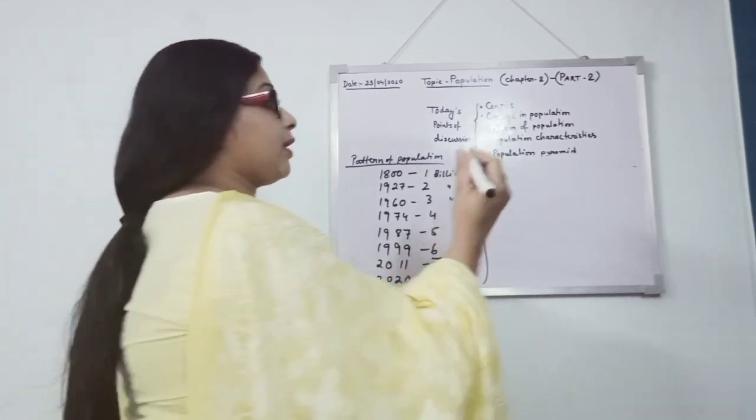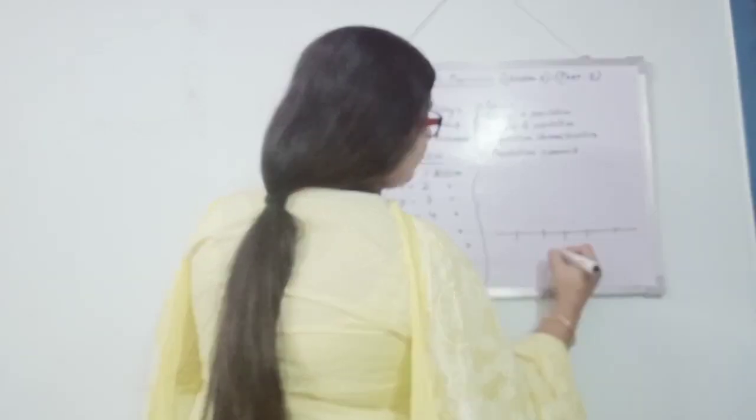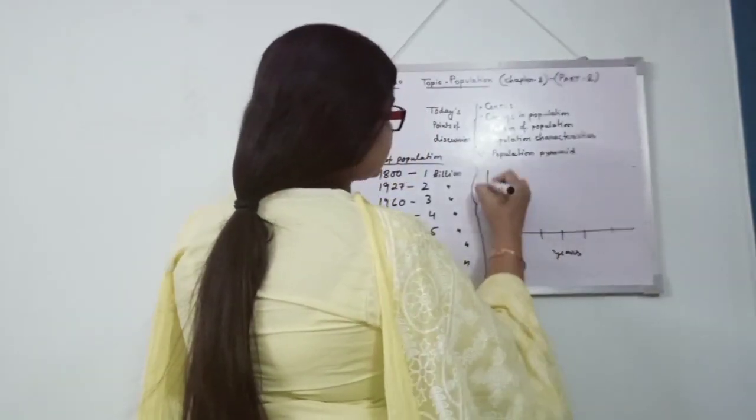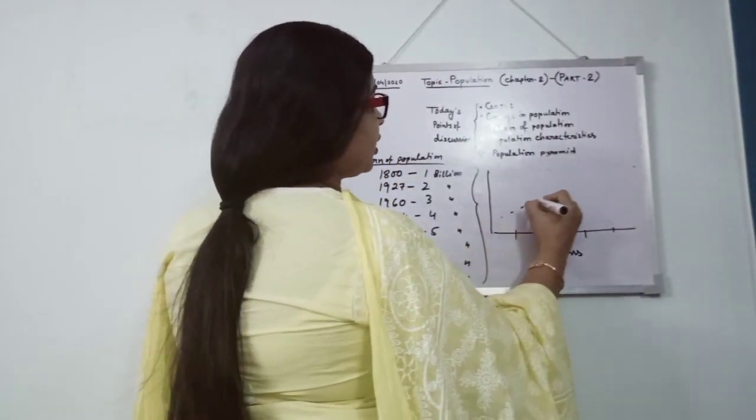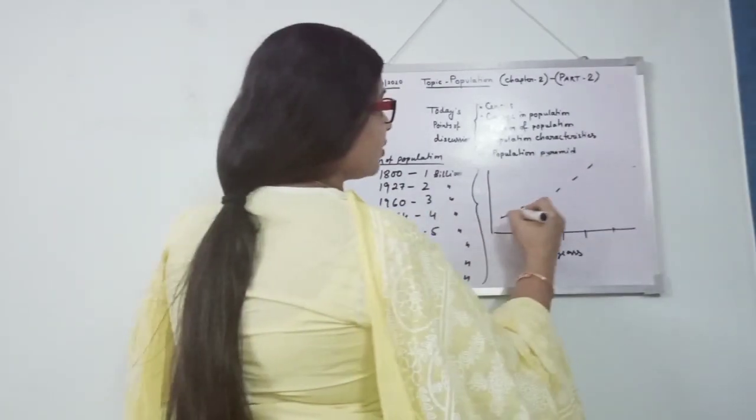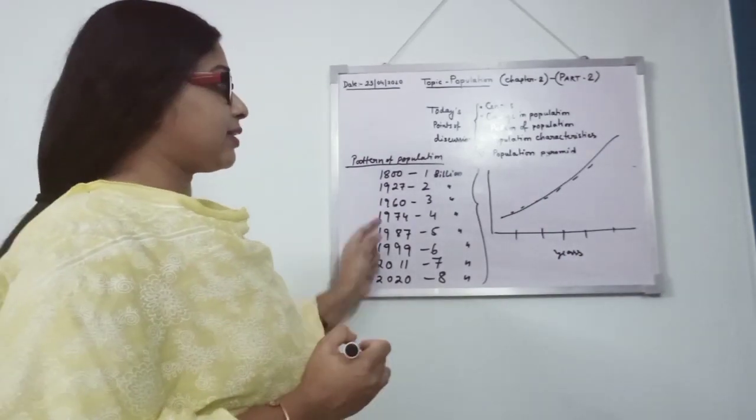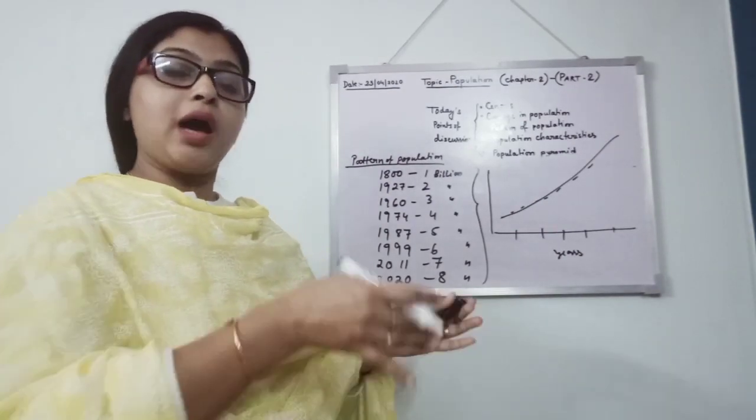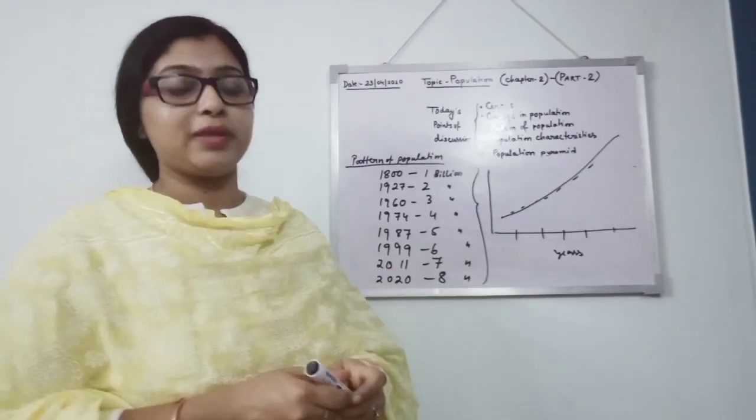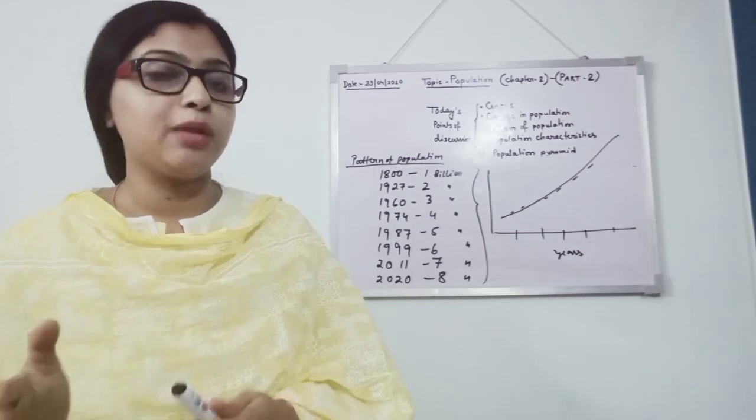So if you make a graph, different years on the scale, if you put that, you will get to see an exponential curve, means rising curve. Through that, we can easily get to know which year had how many people and the difference in total population.